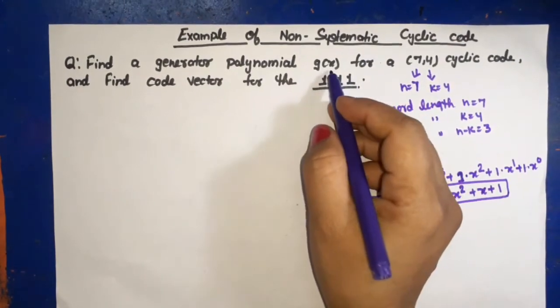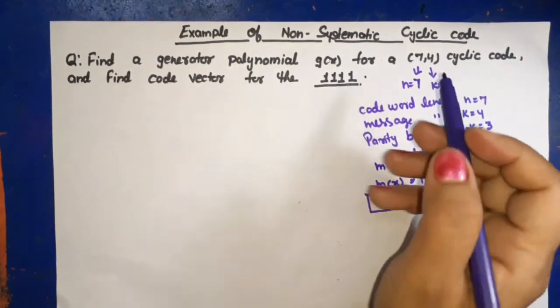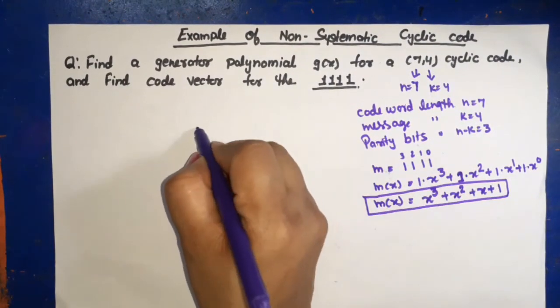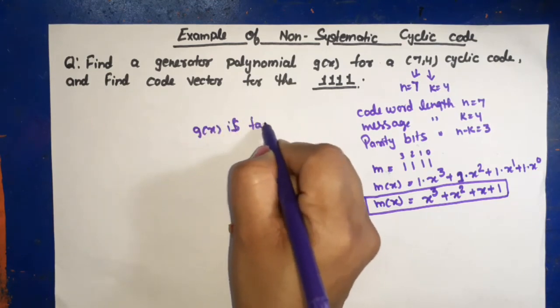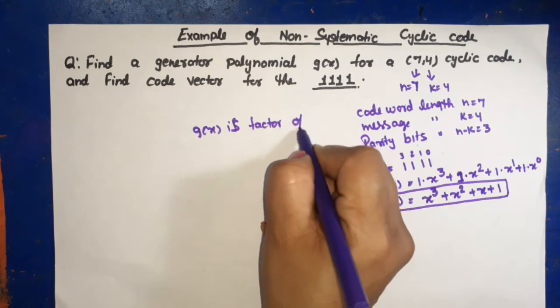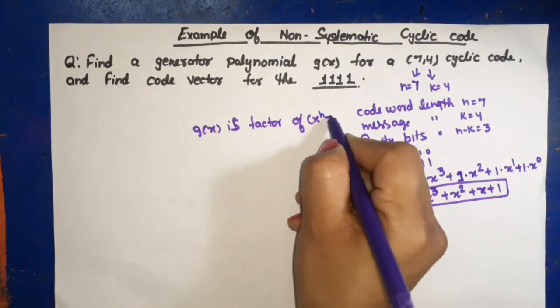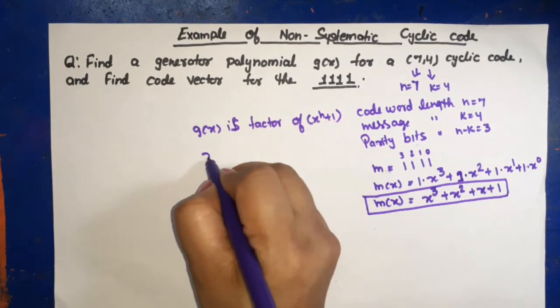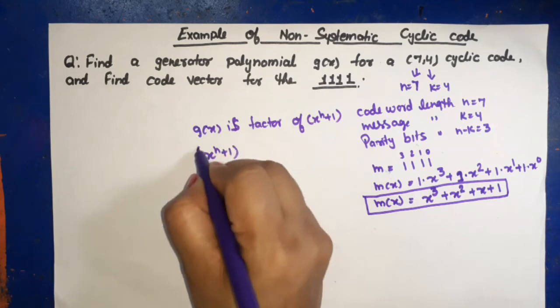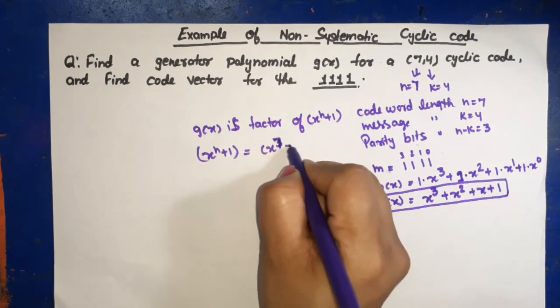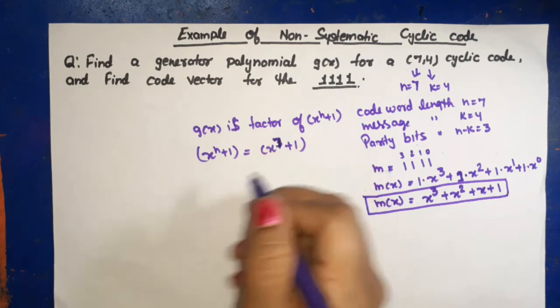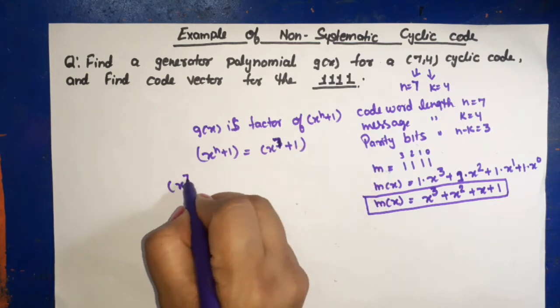g(x) is the factor of polynomial of highest power, means that g(x) is the factor of x^n plus 1. In this case, x^n plus 1 is equal to x raised to power 7 plus 1.